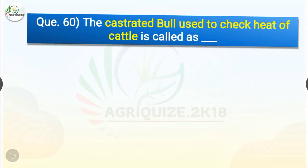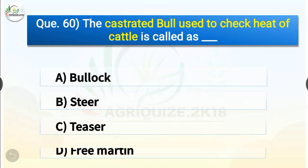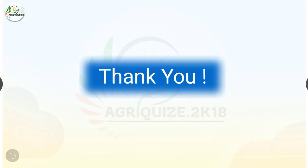Question number 60. The castrated bull used to check heat of cattle is called as dash. The options are bullock, steer, teaser or freemartin. The correct answer is option C, teaser. So the castrated bull used to check heat of cattle is called teaser. That was all. Thank you friends for watching our video. Hope you find it useful. Please subscribe to our YouTube channel for more such videos. Thank you.